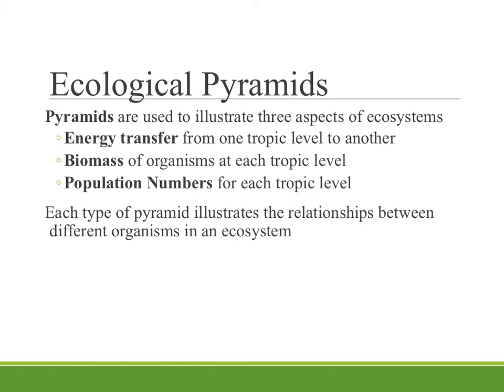Ecological pyramids are used to illustrate three different aspects of ecosystems. They can show the energy transfer from one trophic level to another — called energy pyramids. Or the ecological pyramid could show the biomass of the organisms at each trophic level — how much of that energy is being used to build the organism and make it larger. Or pyramids also show population numbers for each trophic level. Each type of pyramid is used to illustrate different relationships between the organisms in an ecosystem and can help us understand what is happening as energy flows through it.